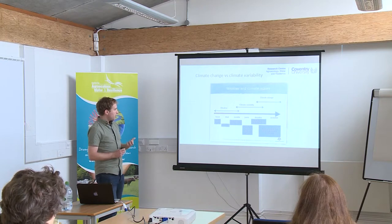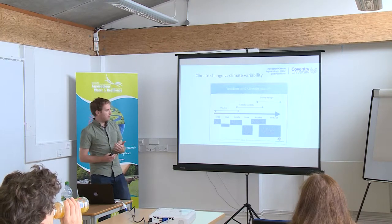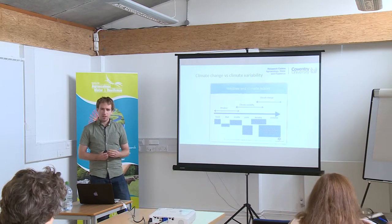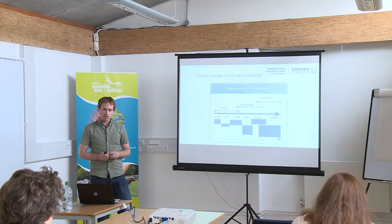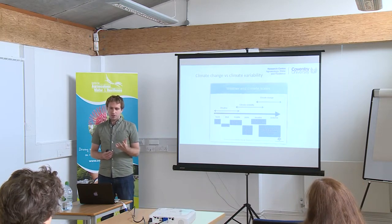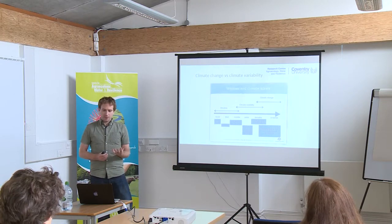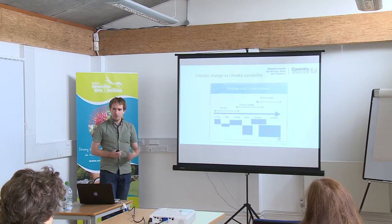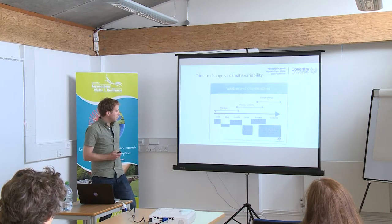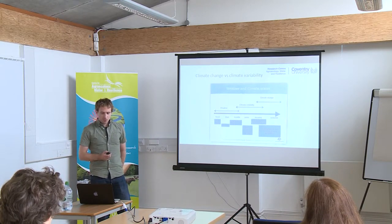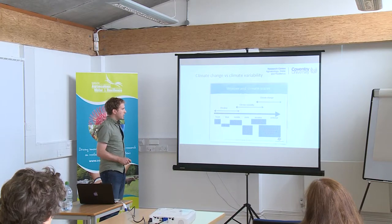Usually with day-to-day weather we're thinking about phenomena such as hot spells or rainstorms that exist on timescales of a few hours to a few days. But climate variability is more driven by large-scale patterns in the climate system, such as the El Niño Southern Oscillation, which many people are familiar with, operating on interannual timescales, through to things like the Pacific Decadal Oscillation, which operates on slightly longer timescales.